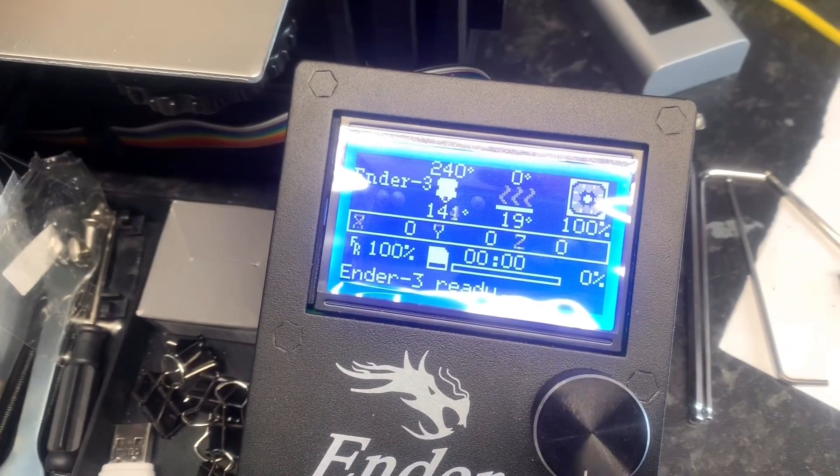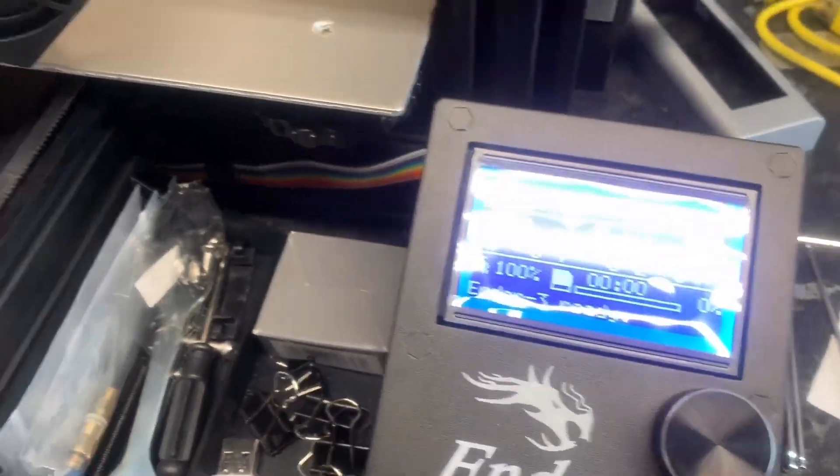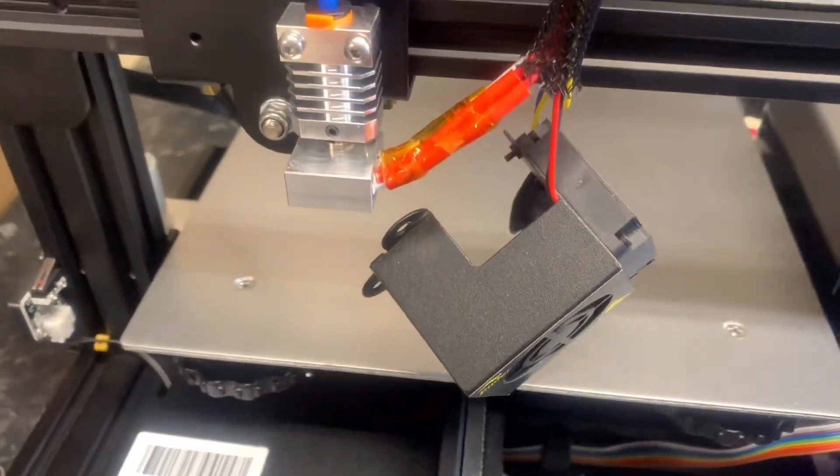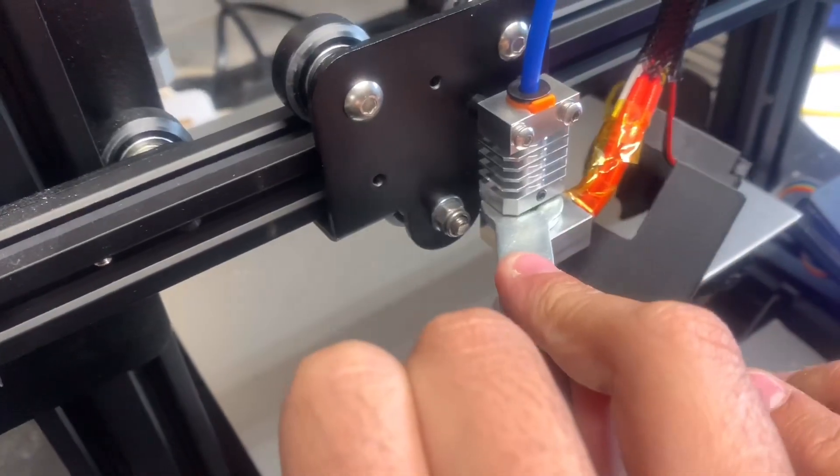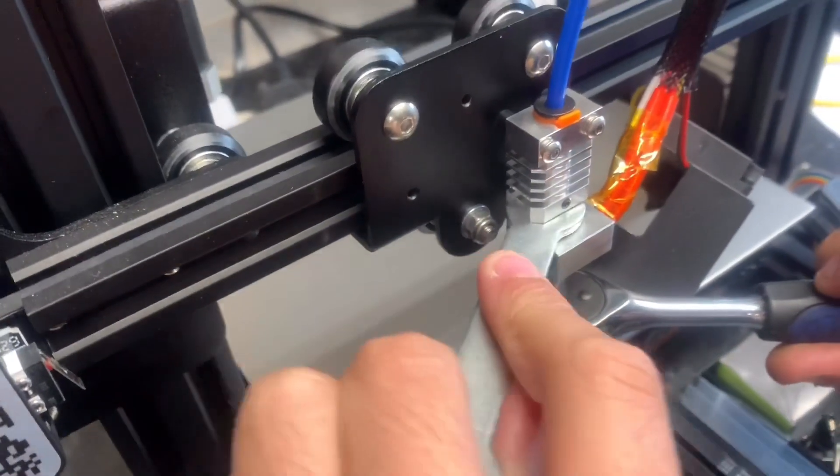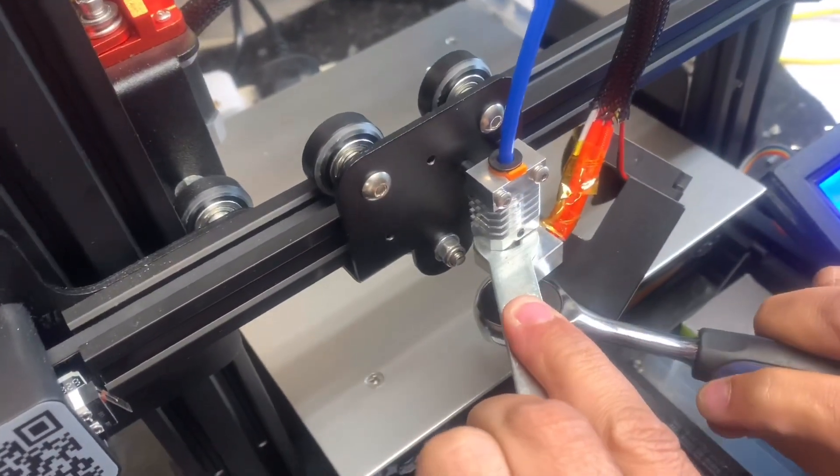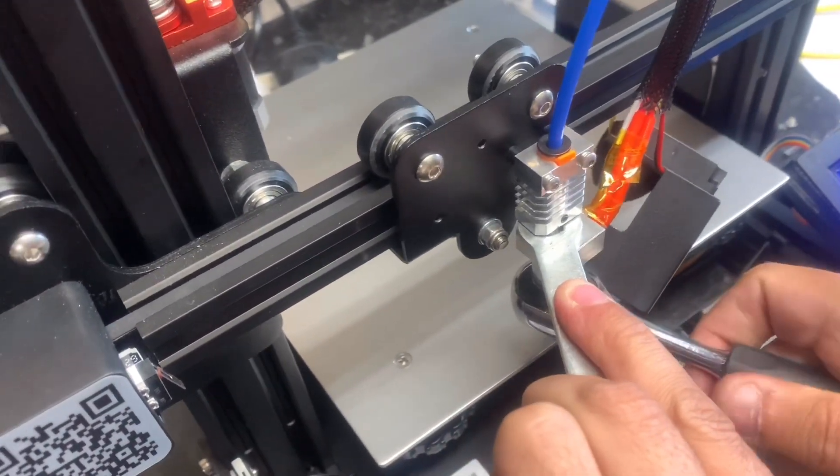Okay, so once that's done we're just going to heat up the nozzle to the desired temperature. For me I'm using PTEG so I'm going to heat this up to 240. And then once it's heated up you want to get the spanner and a socket at 6mm and just tighten the nozzle.